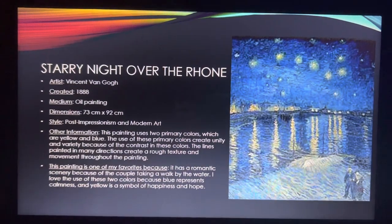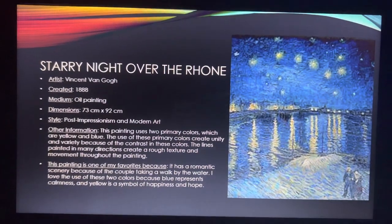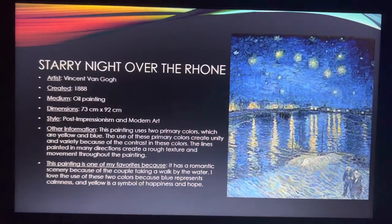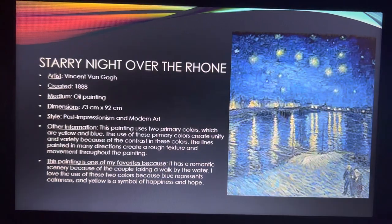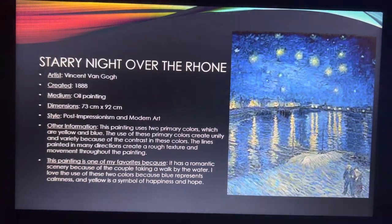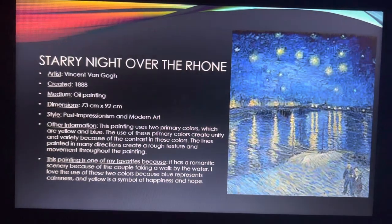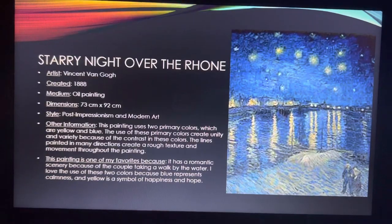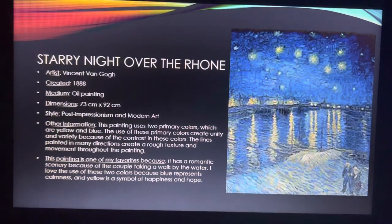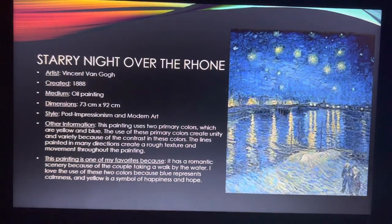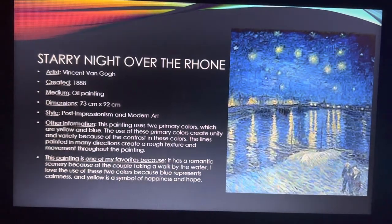This is the Starry Night Over the Rhône, which was created by Vincent Van Gogh in 1888 with an oil paint medium. 88.3 centimeters by 93.1 centimeters are the dimensions for this painting and it has post-impressionism and modern art styles. This painting uses two primary colors, which are yellow and blue. The use of these primary colors creates unity and variety because of the contrast in these colors. The lines are painted in many directions, creating a rough texture and movement throughout the painting.